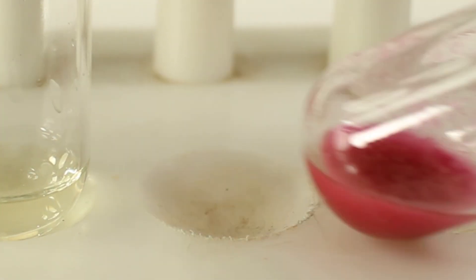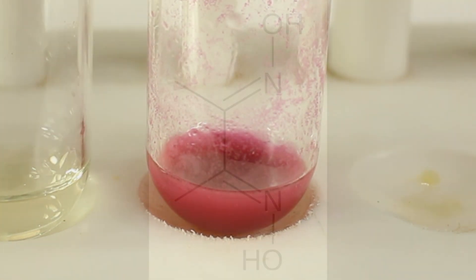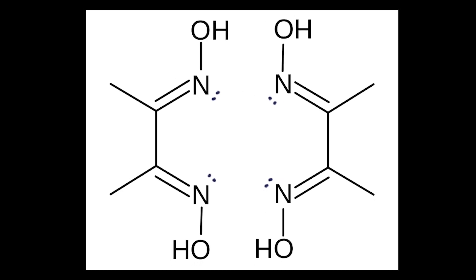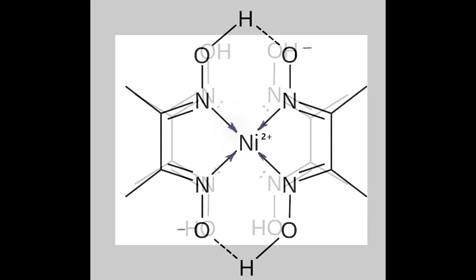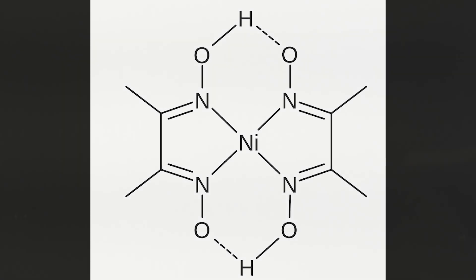How did dimethylglyoxime manage to do this trick? Let's look at its molecule. Nitrogens have lone pairs which can be donated to nickel-2 ions. And the OH groups opposing each other on dimethylglyoxime molecules, if they lose one proton, would form very strong hydrogen bonds. Overall, it's a neutral complex. This happens only in neutral or alkaline conditions — make sure your conditions are never acidic, as this test wouldn't work otherwise.